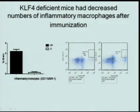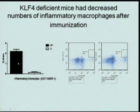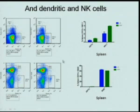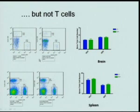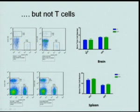After immunizing mice, we observed a decrease in inflammatory monocytes in the brain — GR1-positive CD115-positive cells that normally migrate to the brain. In addition to the decrease in CD11B cells, we also observed a decrease in dendritic and NK cells in the brain and spleen after immunization, but no difference in T cells — both in the spleen and in CD8 and CD4 T cells that migrated to the brain.